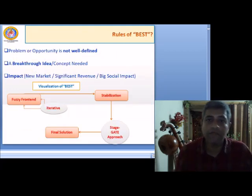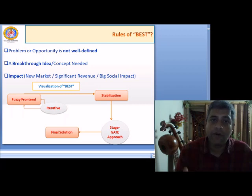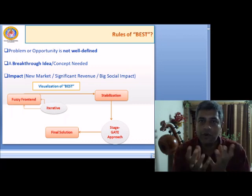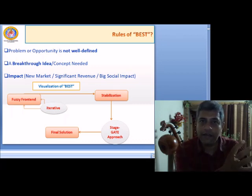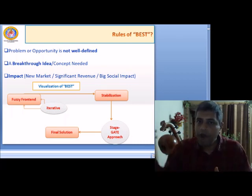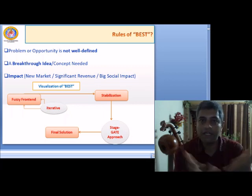Now let us see some more aspects of 'best.' The problem or opportunity is not well defined; a breakthrough idea or concept is needed; there should be a big impact — significant revenue, a big social impact, or entering a new market. There should be a fuzzy front end where you go through many iterations and get some clarity. From there you stabilize your thinking or idea, then go into a stage-gate approach where certain phases come into picture before you reach a final solution.